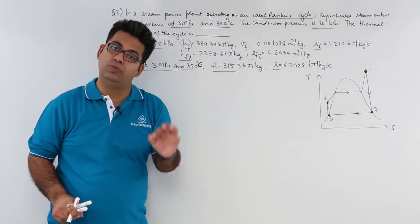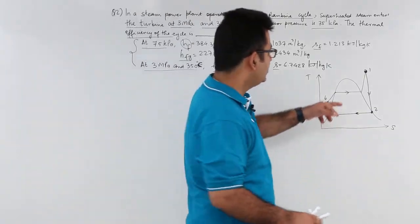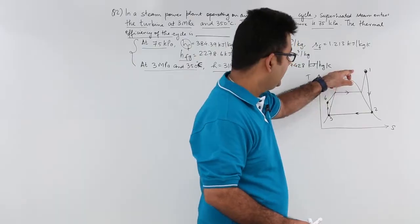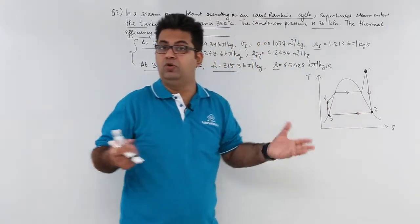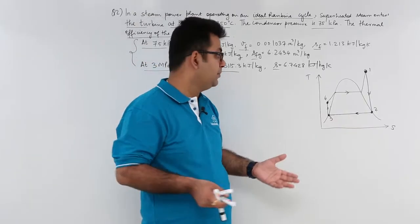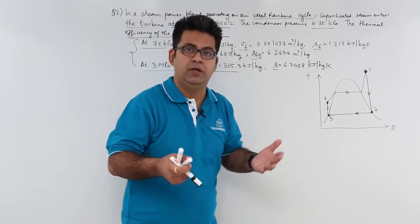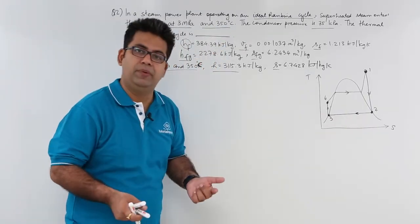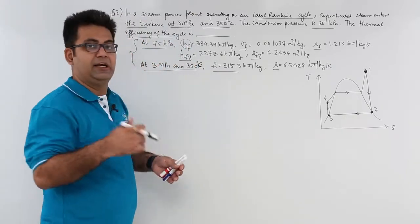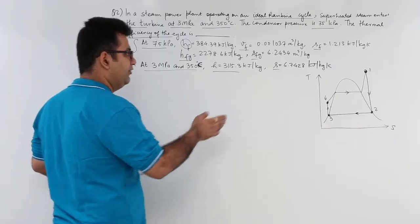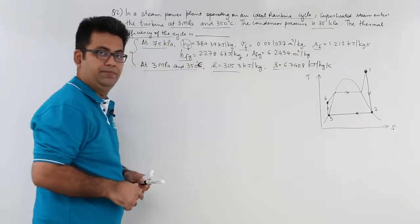Right now we have assumed that from this superheated state, the turbine exit is again saturated. I am just assuming it. Let's try and prove it or find out what would be the exit state. Before that, let's write down the data given to us. Let's start with the first condition that is 1.